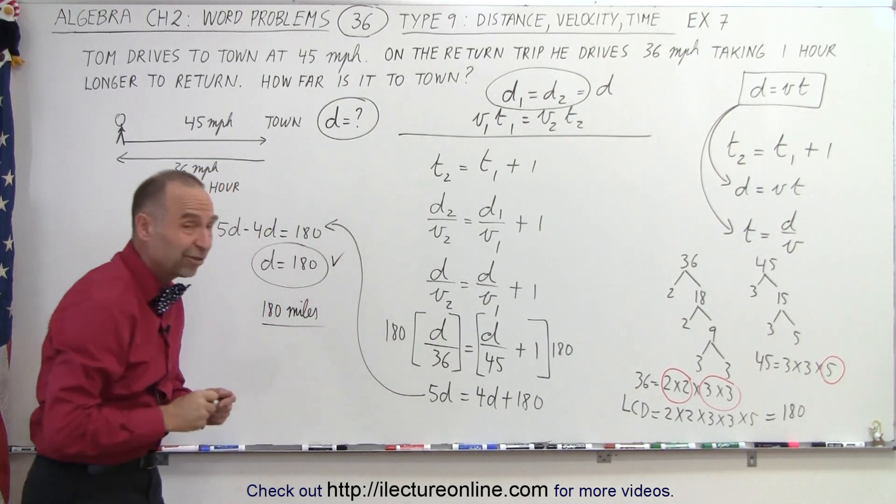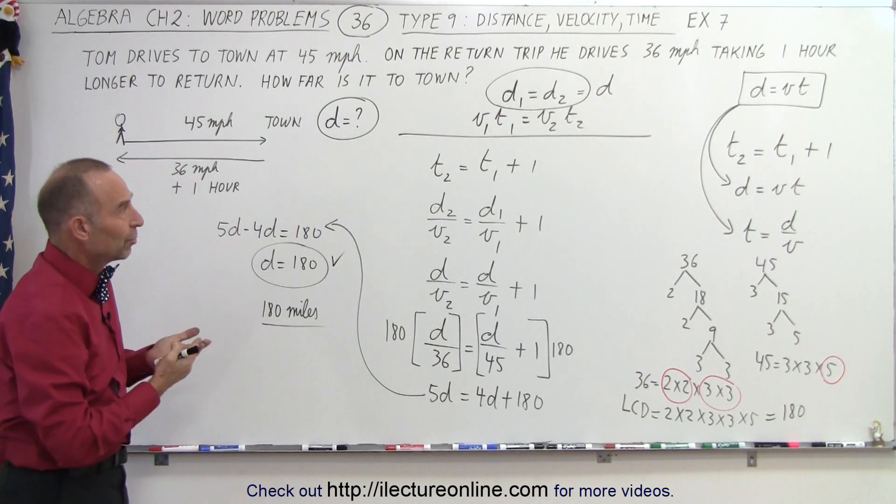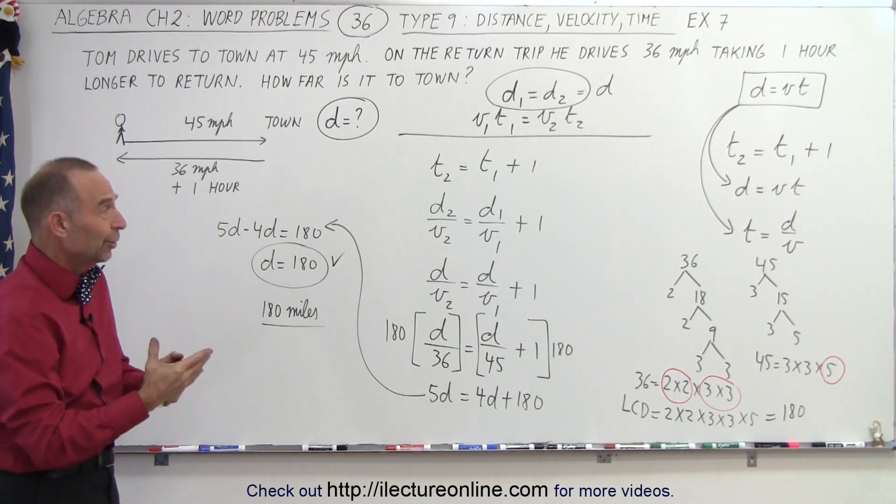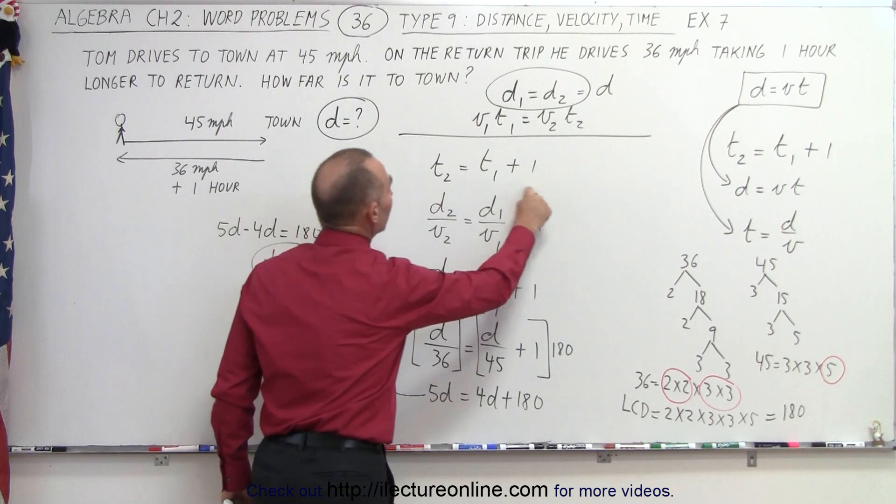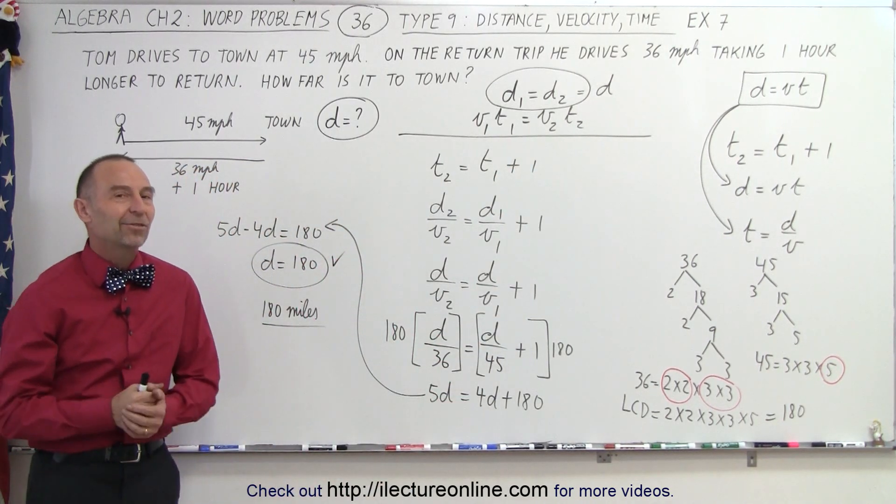As you can see, there's a second perfectly valid method to solve the same problem. In this case, assuming we don't know the time, it's not just an assumption that was true, we didn't know the time, but we knew the relationship between the time, and then we started with that equation, and that is how it's done.